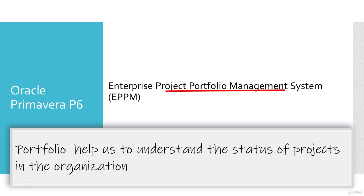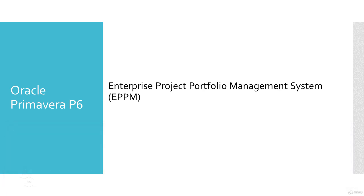PPM allows us to determine what projects need to continue and what projects may not be necessary to continue with — those may be discontinued if needed. We can also analyze all ongoing projects in the organization. Primavera P6 helps us to determine which project has the highest benefits, which we call return on investment, or ROI.